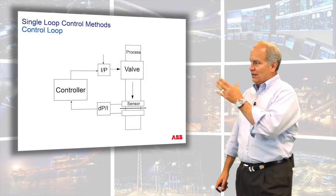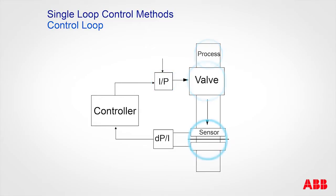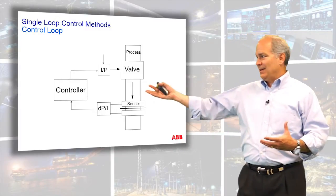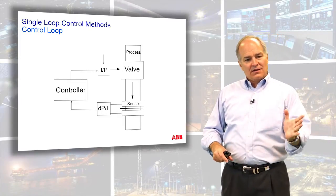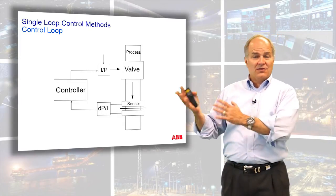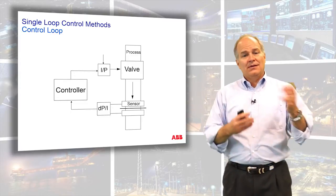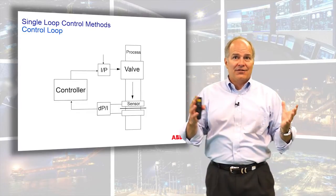What we've looked at so far is this control loop where we have our controller talking to an I2P converter, which talks to a valve, which changes the process — maybe an orifice plate or something like that — and a transducer that converts that back into a measurement. So you literally have this control loop. This could be a flow, pressure, temperature, level — whatever. You have those attributes: controller, a pressure converter, a valve positioner. It changes the process; the process changes some transducer. So my question is: where can nonlinear responses or nonlinearities show up?